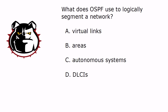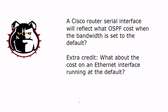A Cisco router serial interface will reflect what OSPF cost when the bandwidth is set to the default? When I bring up the live equipment, I've got an OSPF config running and I haven't done anything strange with the serial interface. What will that cost be? And here's the extra credit question: what about an Ethernet interface — what OSPF cost will that have?